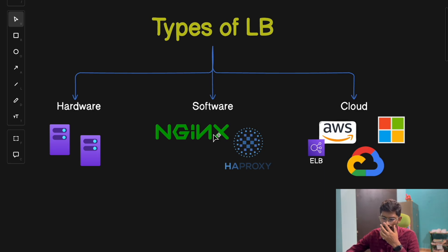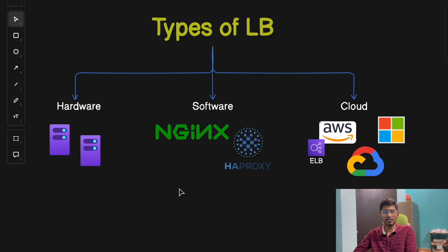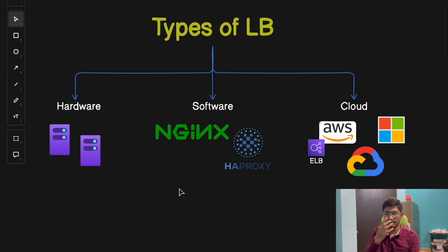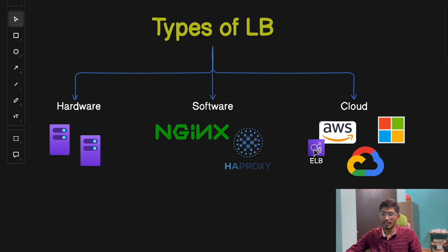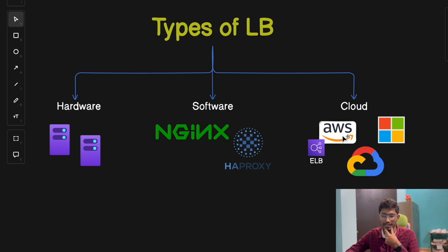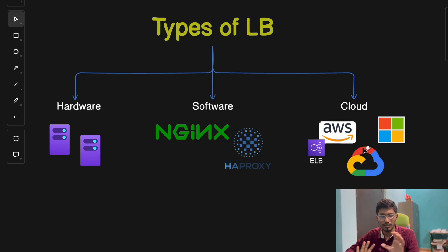Popular examples of software-based load balancers are Nginx and HAProxy. They are a great choice for businesses that need flexibility or want to avoid hardware costs, since maintaining a physical load balancer resides on the higher side of cost. Finally, there are cloud-based load balancers — services provided by cloud providers like AWS, Azure, and Google Cloud. Cloud-based load balancers are entirely managed by the provider, meaning you don't have to worry about setup, maintenance, or scaling.